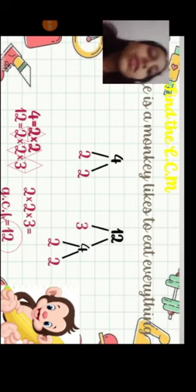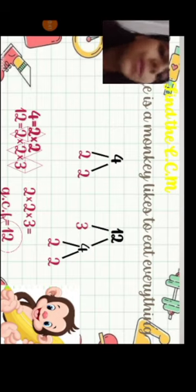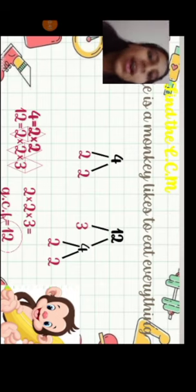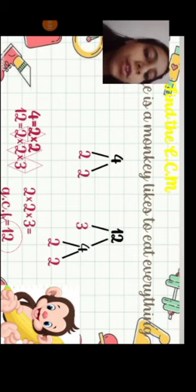3 is a prime factor, so circle it. 4 is not prime, it's composite. So what two factors multiply to get 4? 2 and 2. So 4 equals 2 times 2. And 12 equals 2 times 2 times 3.